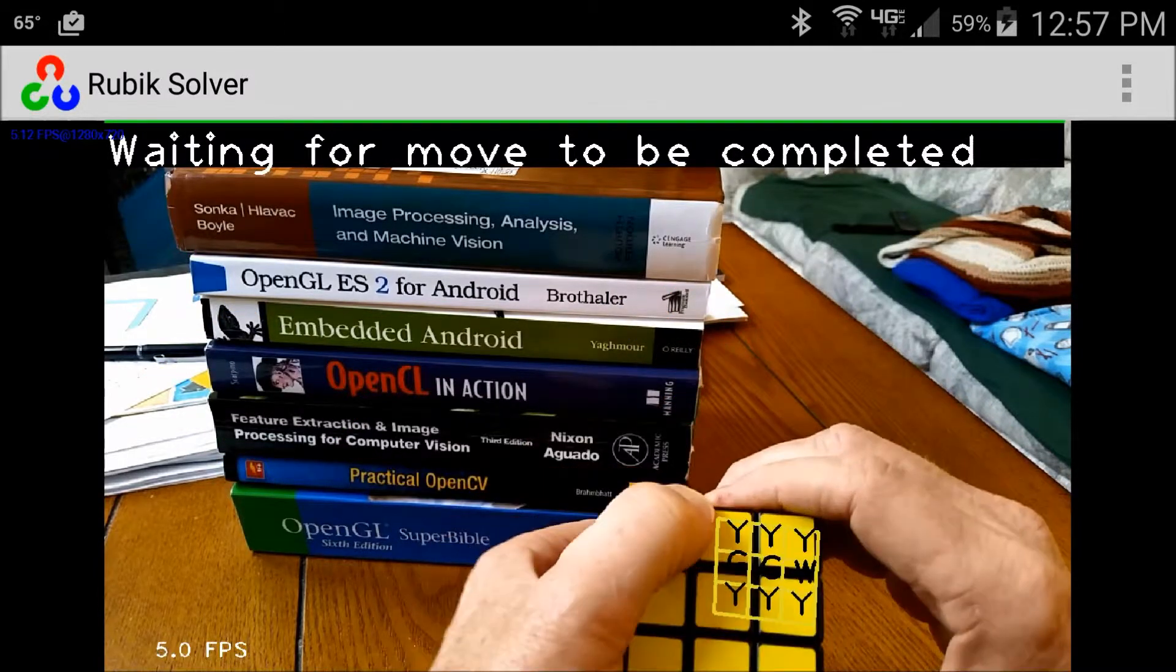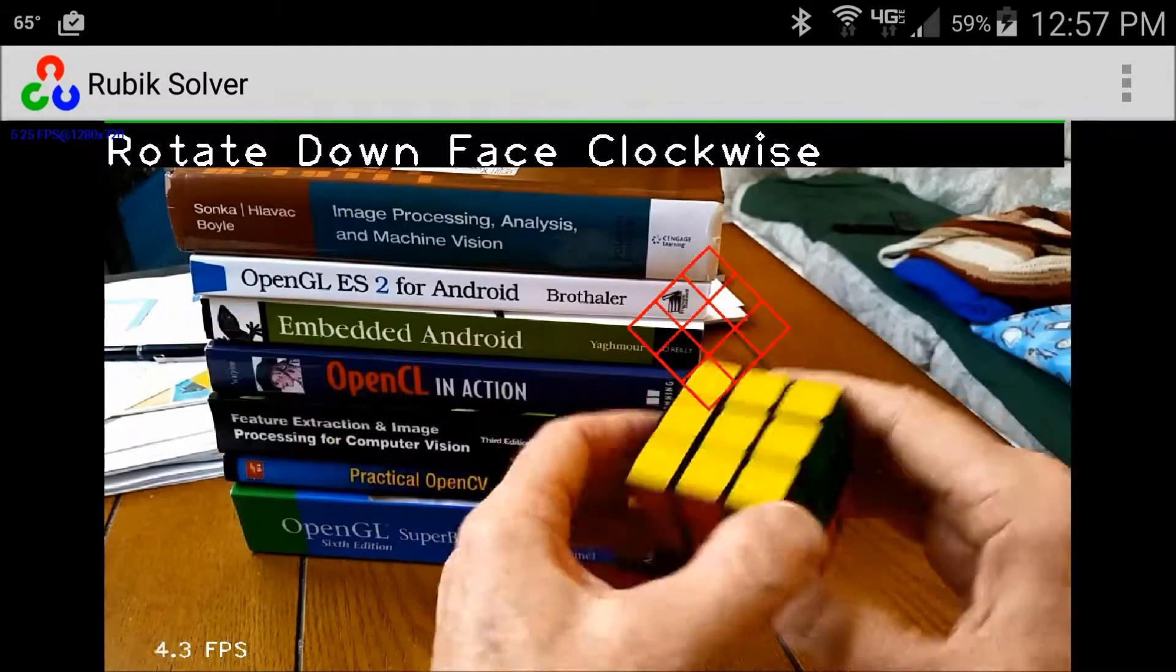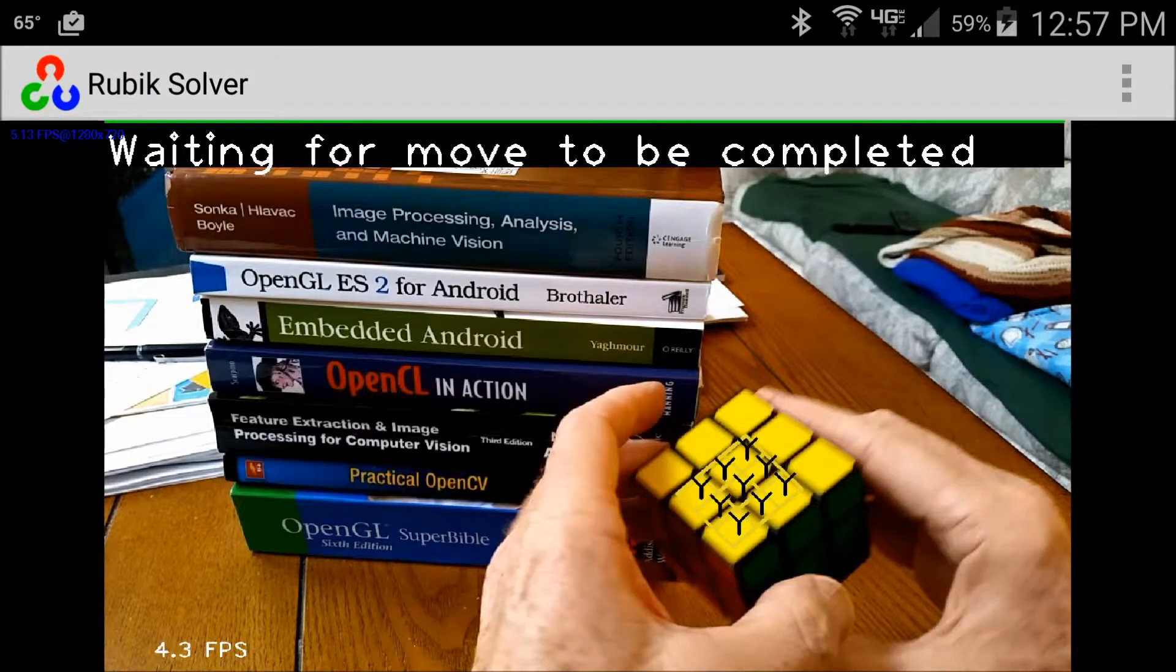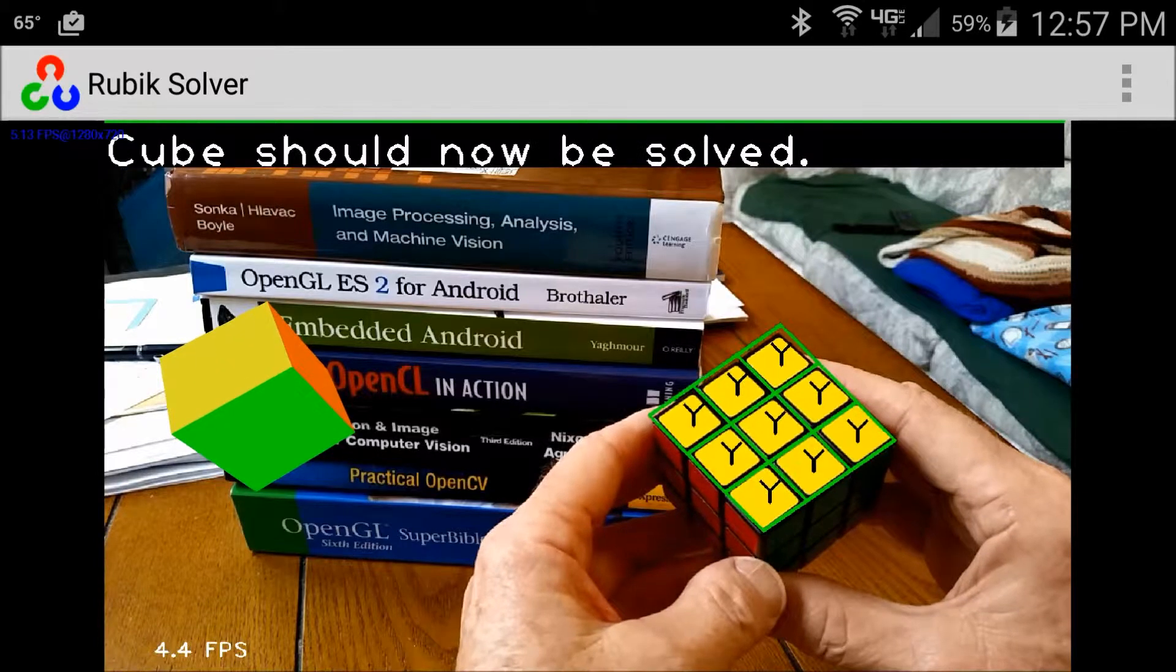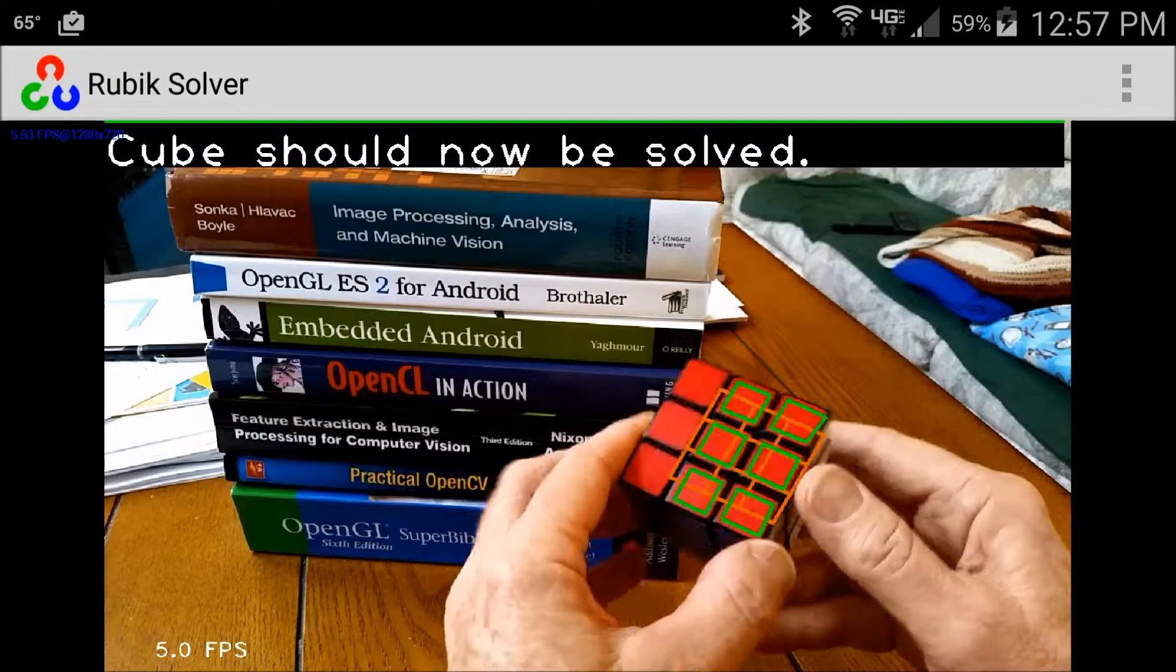As can be observed, the application attempts to lock onto one face at a time. Typically, not all nine tiles of a face are recognized, so a certain amount of reconstruction of the 3x3 tile grid occurs.